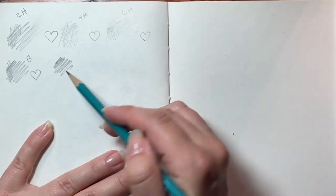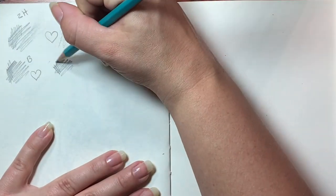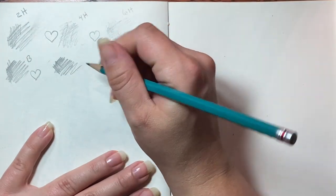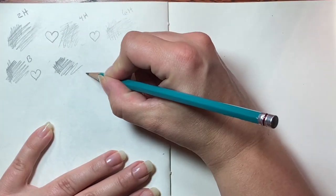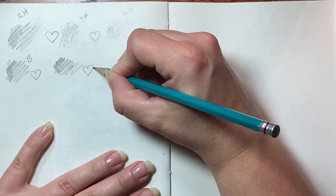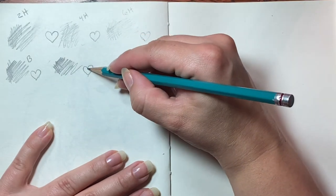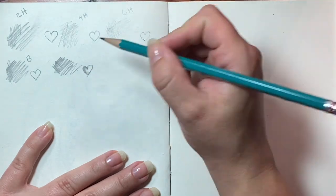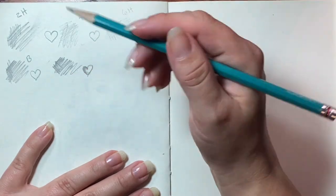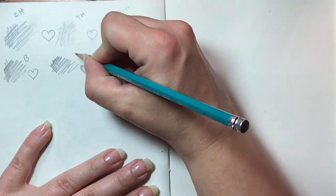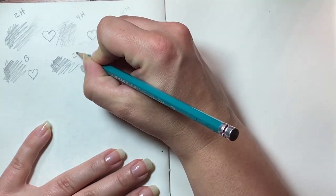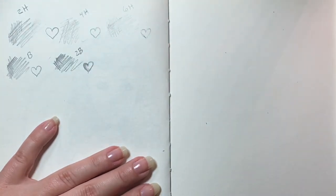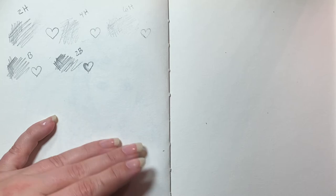Look at how much darker that is already. These are, if you do graphite drawings, these are going to be what you shade with, various mid tones and shadow tones and you know darker and lighter tones. But these will be what you would want to do your shading with, the B's not the H's.